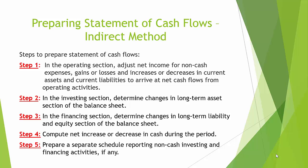The steps to prepare a statement of cash flows include the following. Step 1: In the operating section, adjust net income for non-cash expenses, gains or losses, and increase or decrease in current assets and current liabilities to arrive at net cash flow from operating activities. Step 2: In the investing section, determine changes in long-term assets on the balance sheet. Step 3: In the financing section, determine changes in long-term liability and equity on the balance sheet.